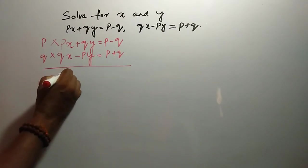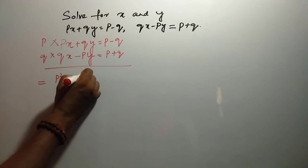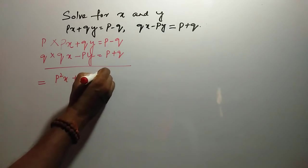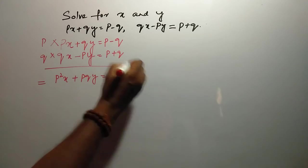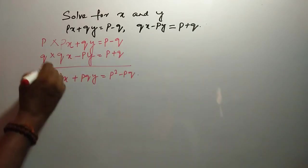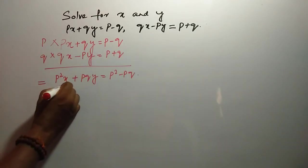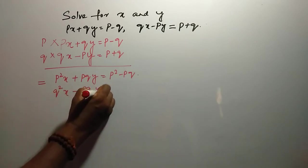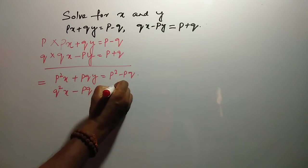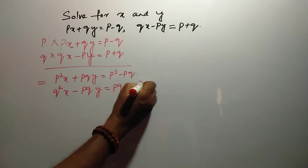Now, it is P square X plus PQY is equal to P square minus PQ and here it is Q square X minus PQY is equal to PQ plus Q square.